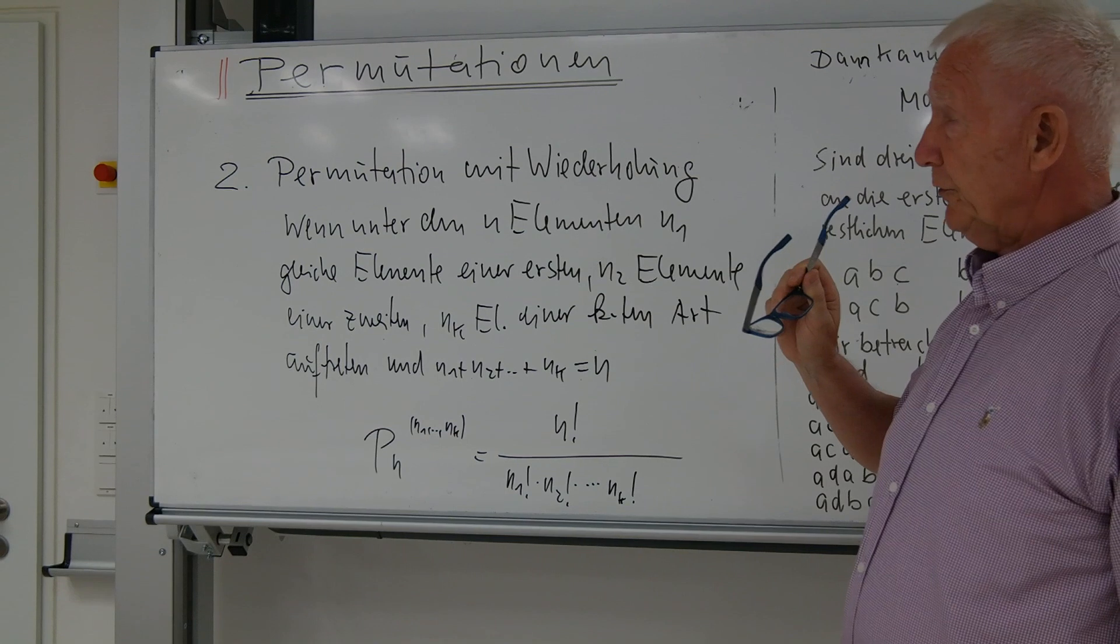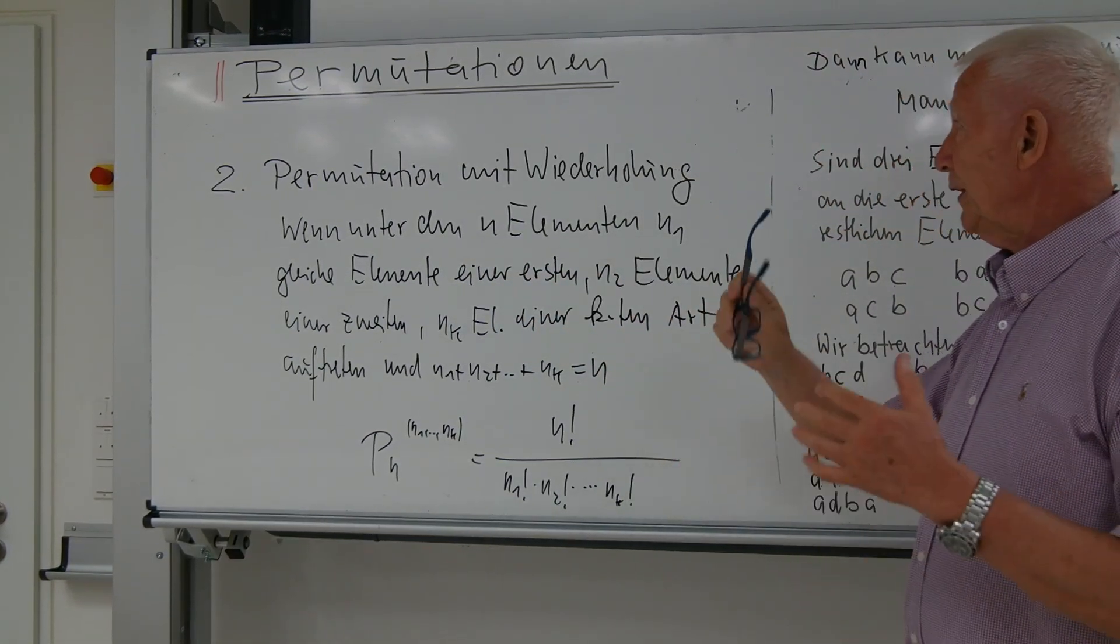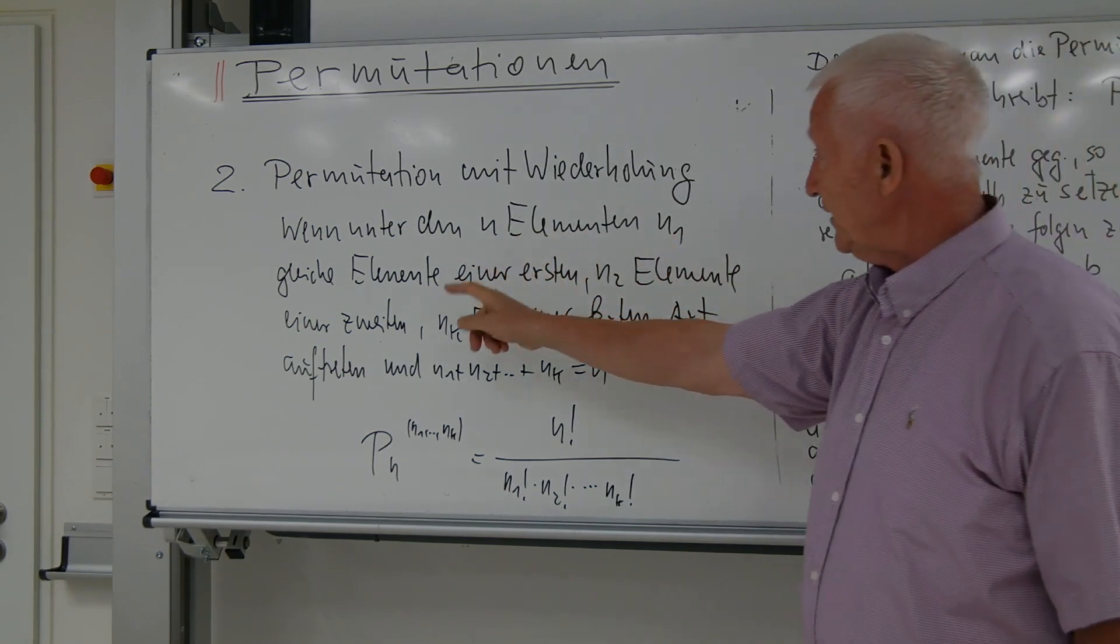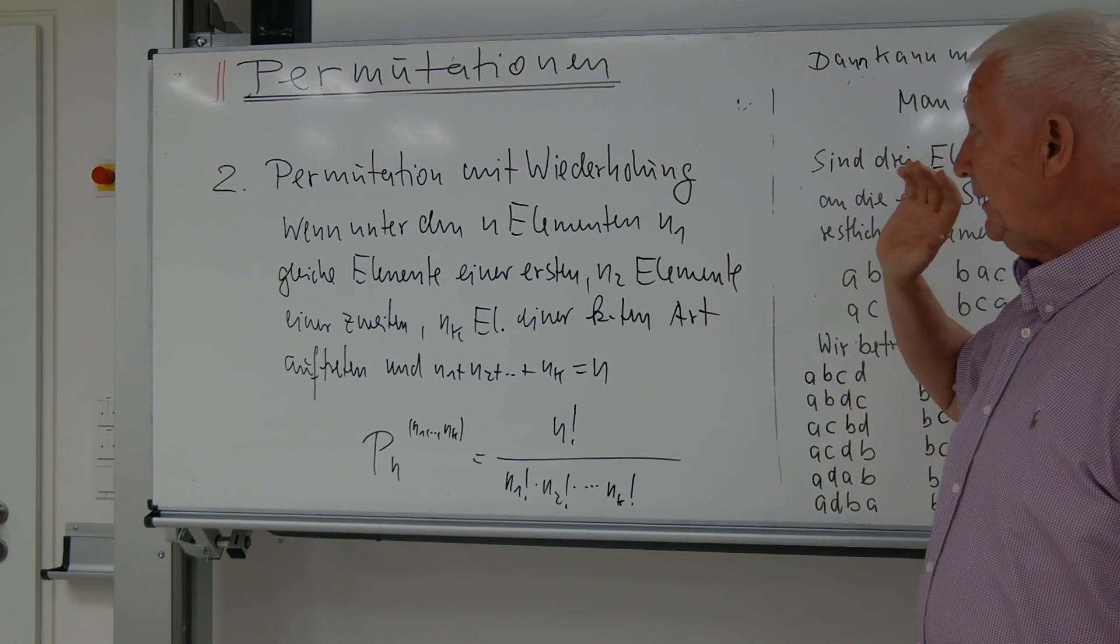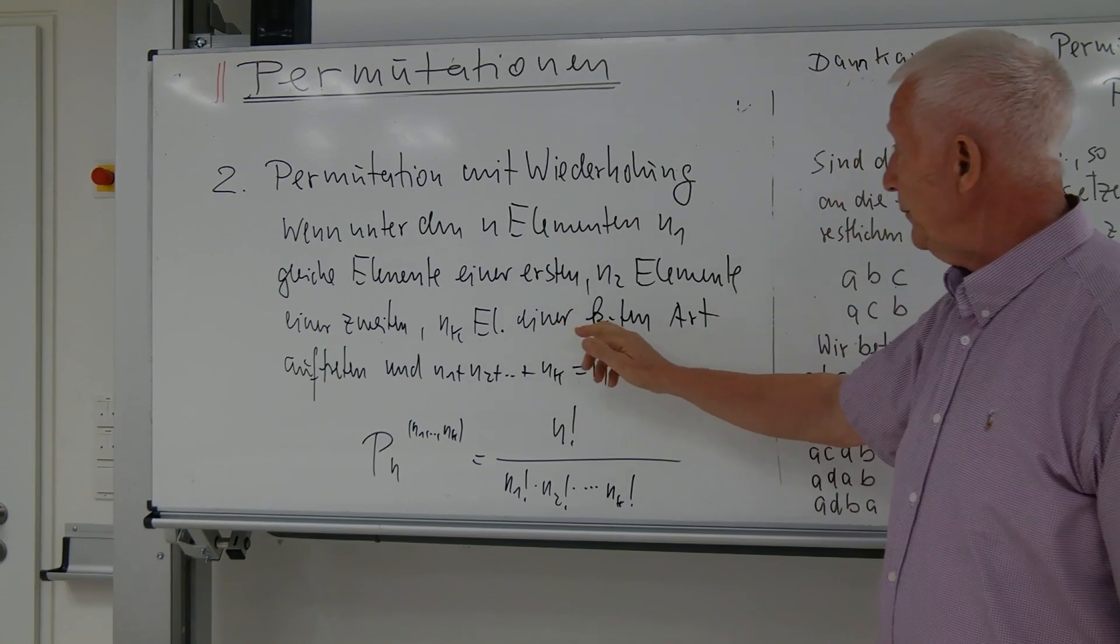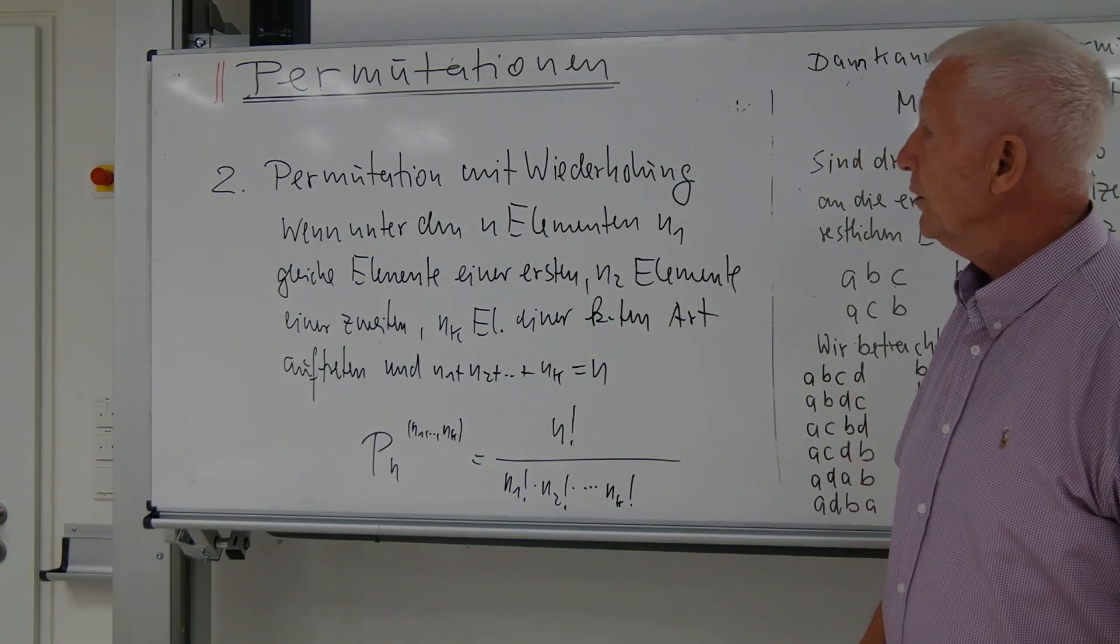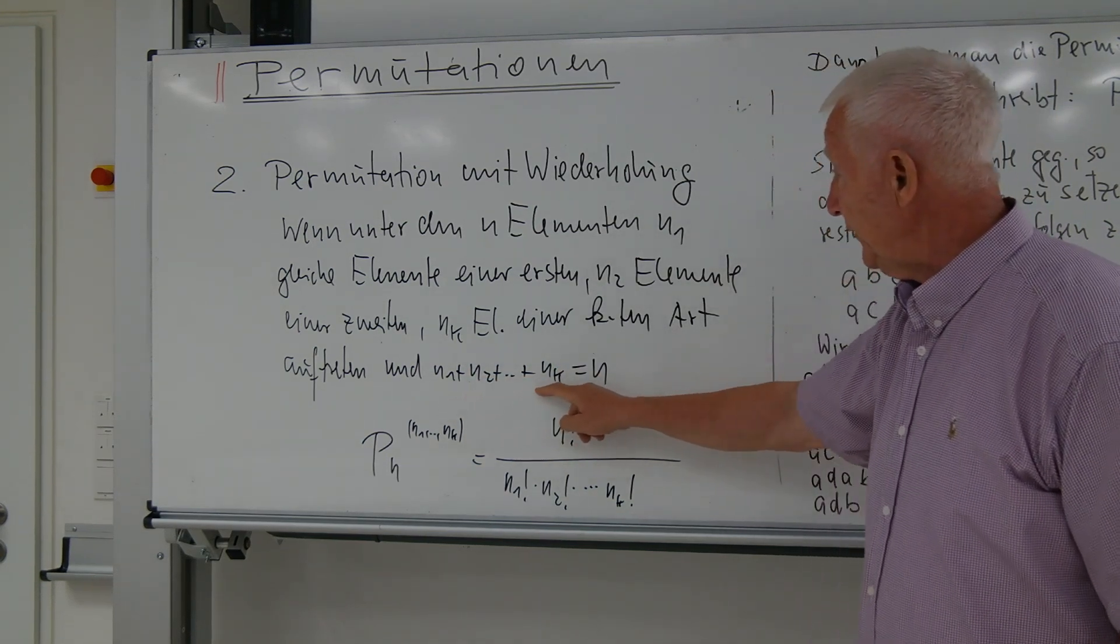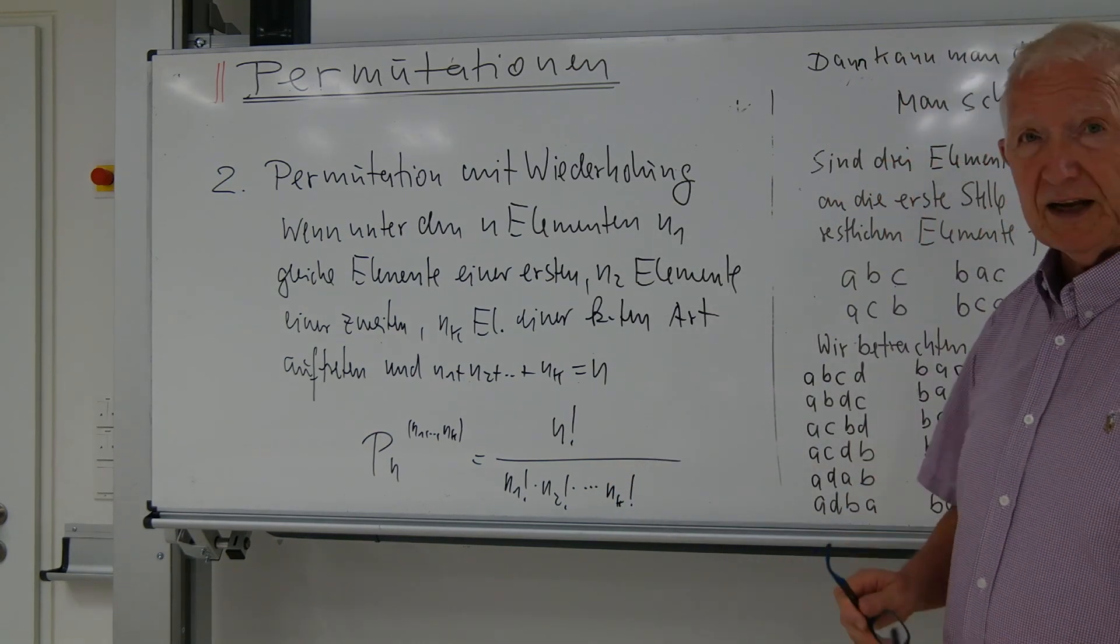Da gehe ich von folgendem aus: wenn unter den gesamten n Elementen n1 gleiche Elemente einer ersten, n2 Elemente einer zweiten und schließlich nk Elemente einer k-ten Art auftreten und dabei die Summe dieser mehrfach auftretenden Elemente gleich der Gesamtzahl n ist,